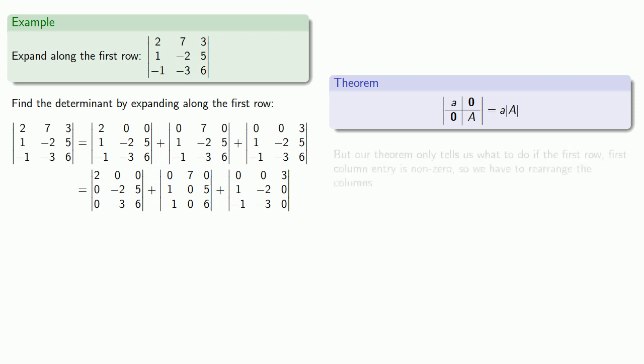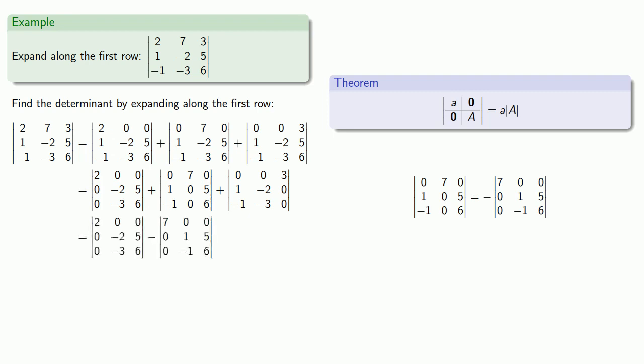And there's a problem. Our theorem only tells us what to do if the first row, first column entry is non-zero. Well, that's okay. We just have to rearrange the columns. So for the second matrix, if I switch the first and second columns, that will move this non-zero entry to the first column, first row position. And since we've switched adjacent rows, that will change the sign of the determinant. Equivalently, we'll be subtracting the determinant now.